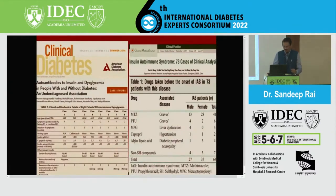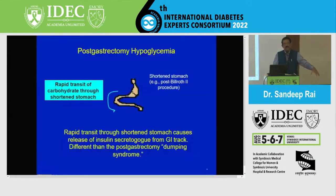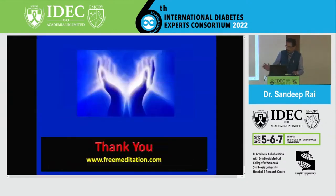In summary: reactive hypoglycemia — rapid transit of food, sometimes after gastric surgery — is easily amenable to treatment. So again, three causes for the seemingly well patient and three causes for patients who are not looking well. This is how I have conceptualized it and tried to briefly present it. I thank the IDEC team and the chairpersons for giving me this chance.